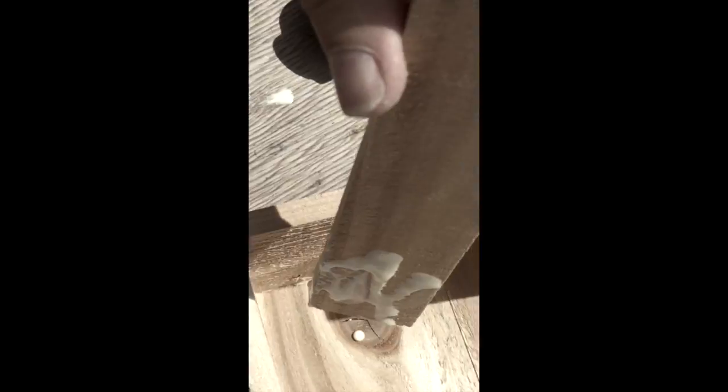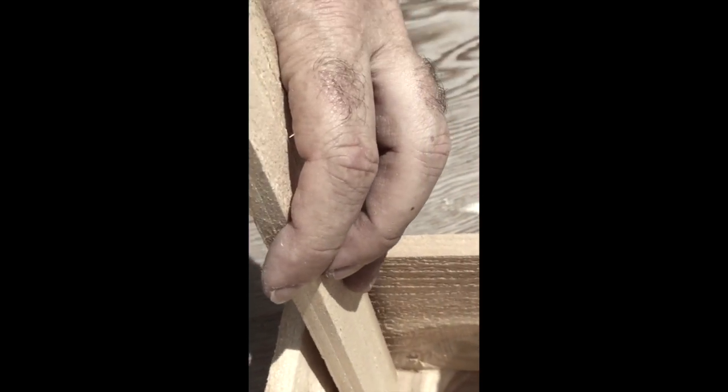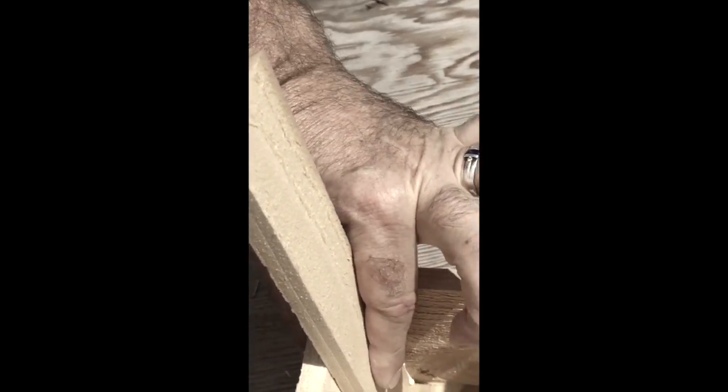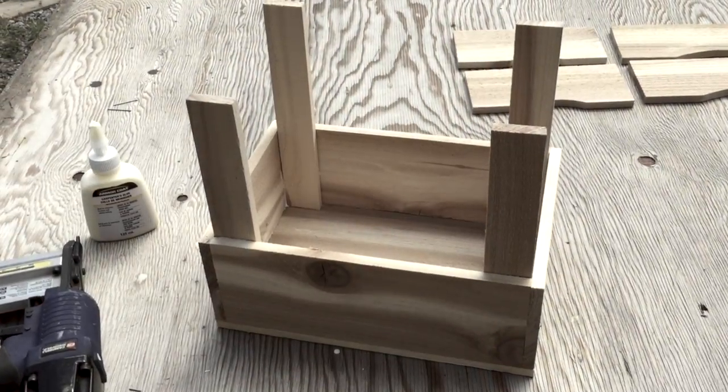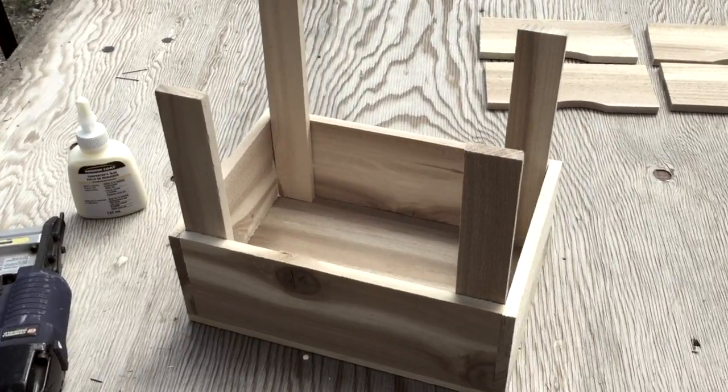For the corner stakes, given that they're going to have so much strength or pressure on them, figure the best thing to do is glue on the end and two contact sides.